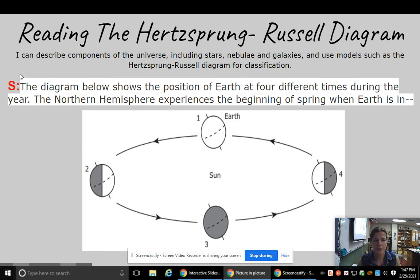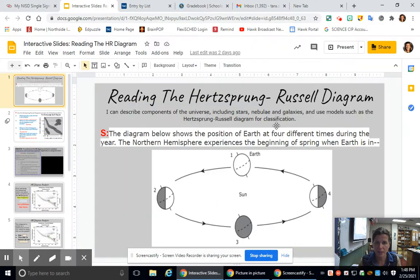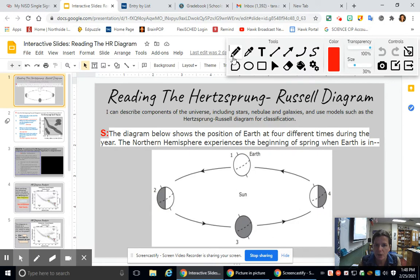Let's look at our starter. The diagram below shows the position of Earth at four different times during the year. The northern hemisphere experiences the beginning of spring when Earth is in what position? So I'm going to exit out of my screen and grab some wet paint and explain this to you. What we want to know is in the northern hemisphere, I want to know when it's spring in the northern hemisphere.